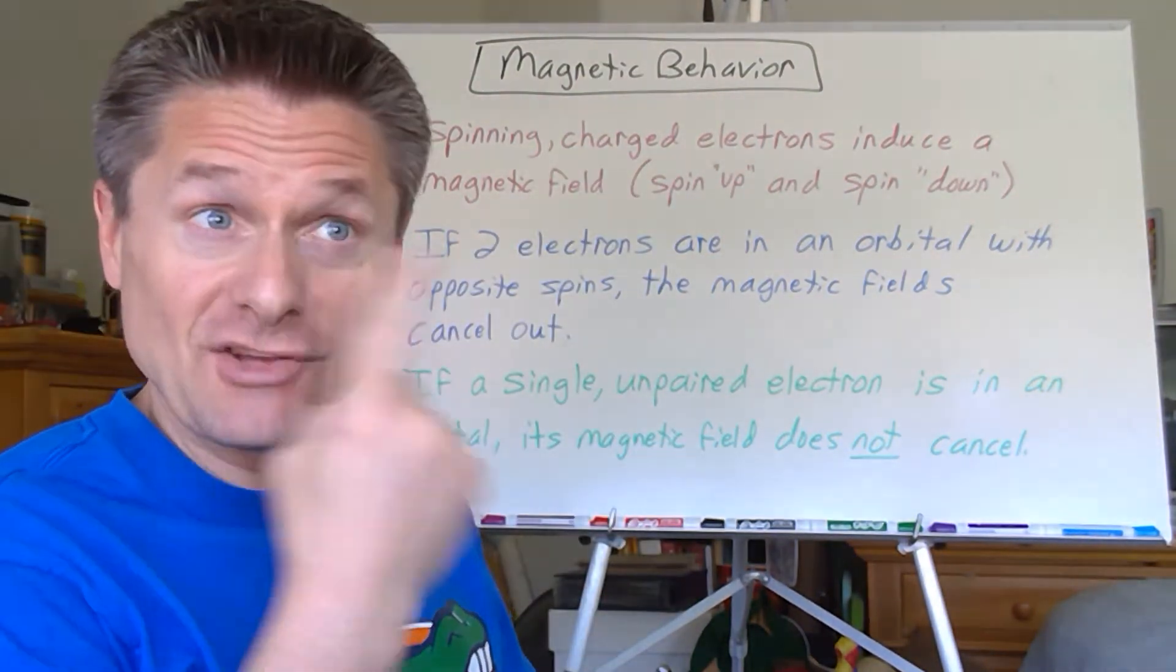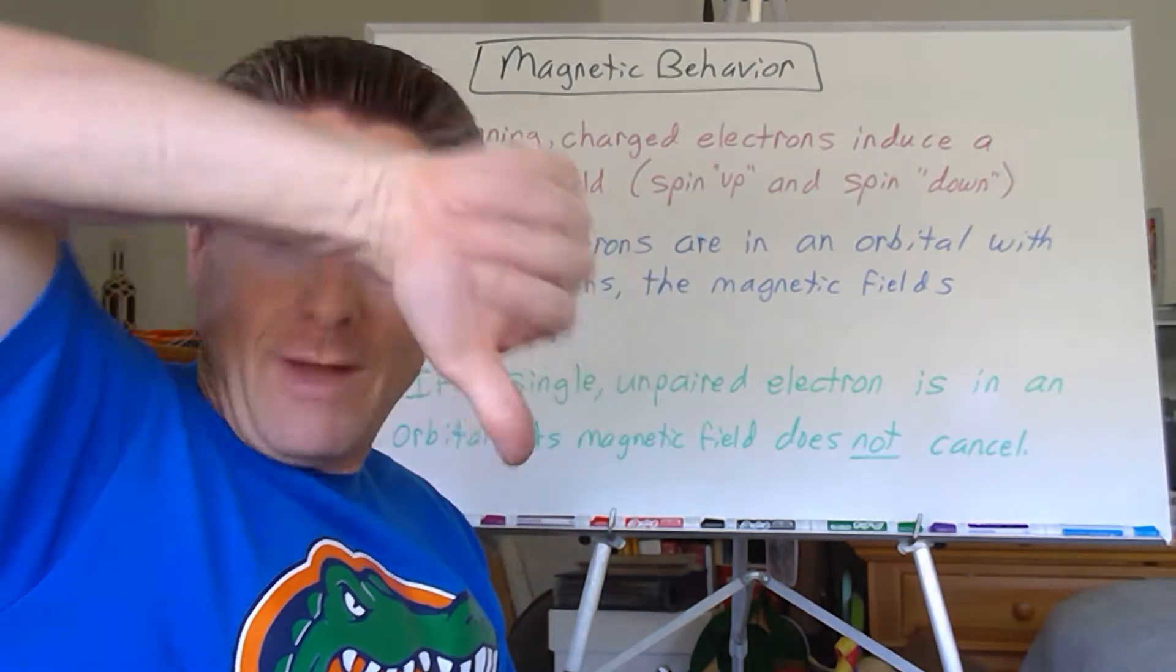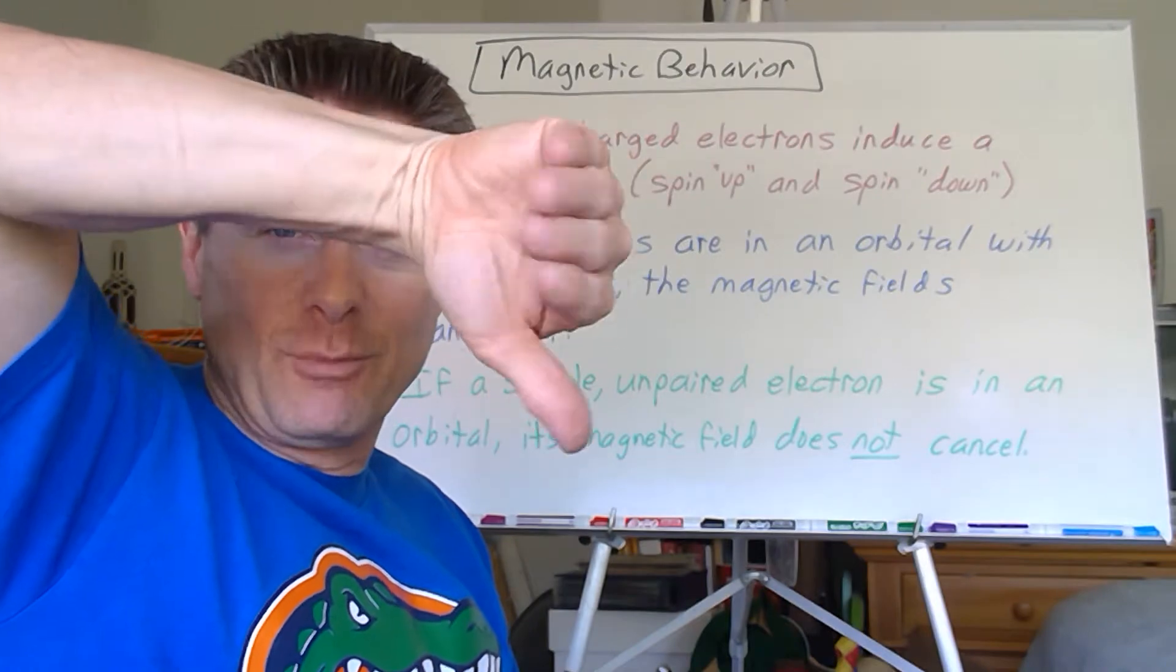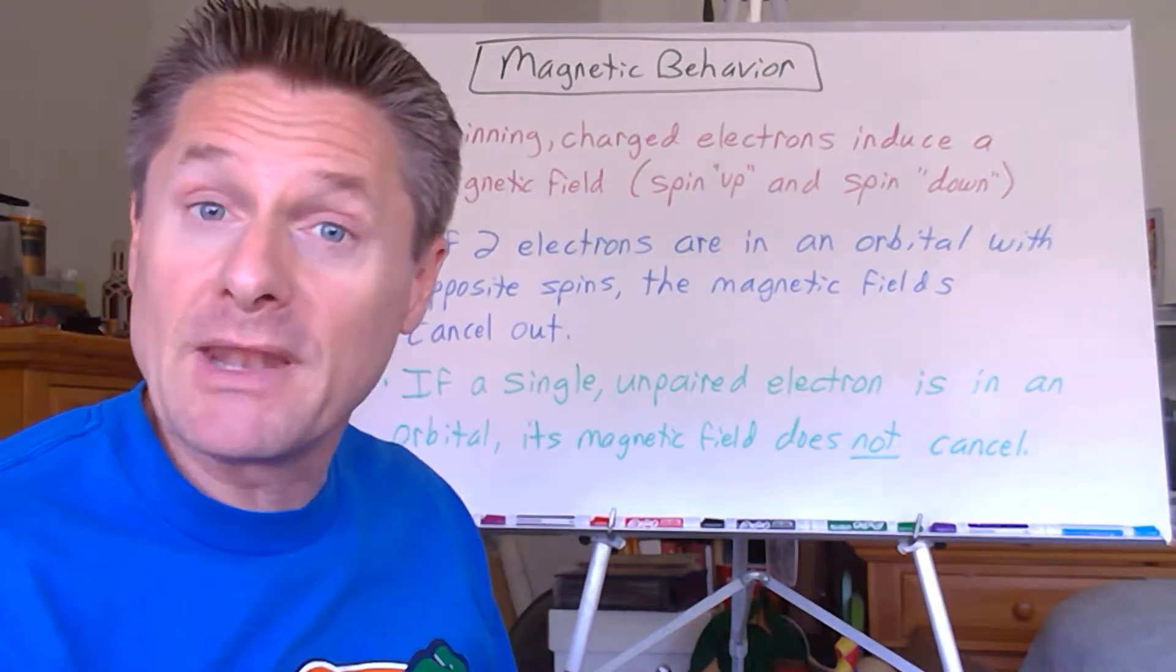Spinning electrons are charged, and if they're rotating, they generate a magnetic field. If they're rotating clockwise, it's spin down, magnetic field points down. If they're rotating counterclockwise, the magnetic field points up, spin up.